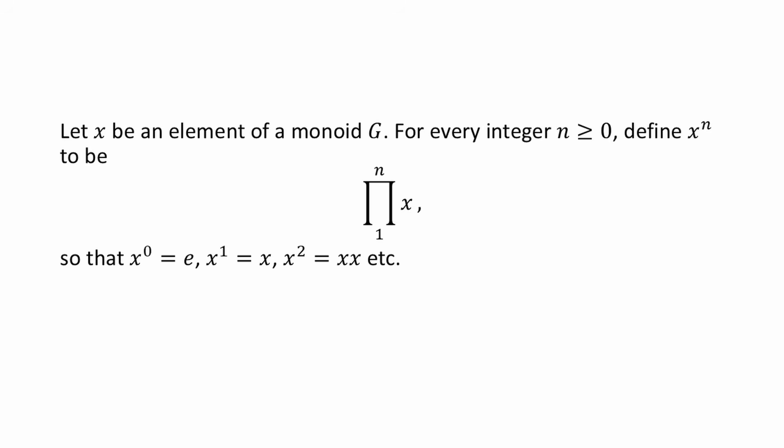If you are unfamiliar with what a monoid is, you can check out my first algebra video for the definition. Given that G is also commutative, if x and y are elements of G, prove that (xy)^n equals x^n product y^n.